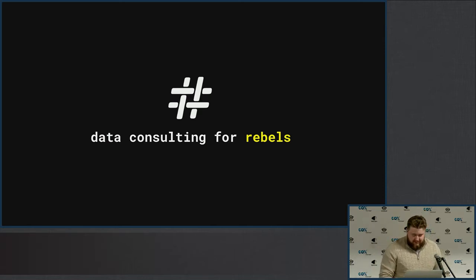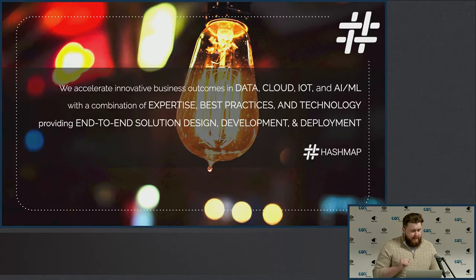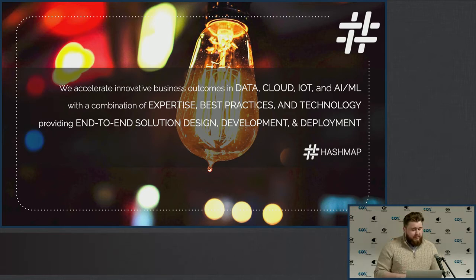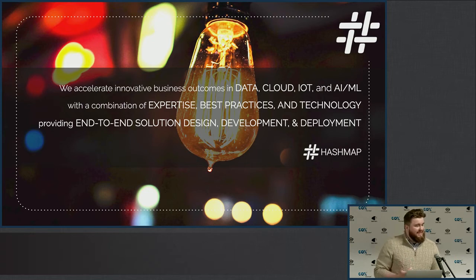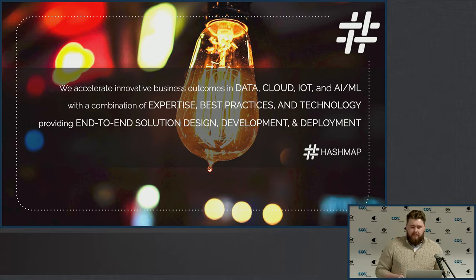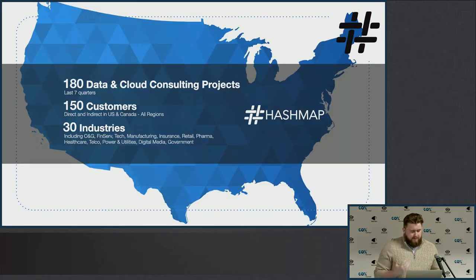The official line — what my sales guy would have me say — is that we accelerate innovative business outcomes in data, cloud, IoT, and AI/ML, with a combination of expertise, best practices, and technology, providing end-to-end solution design, development, and deployment. This is accurate, but it doesn't give you that same emotional pull. Why go with us over a Booz Allen Hamilton or an Accenture? It's because we can do things they won't. We can move faster. We're about 180 people, with around 150 customers across 30 industries.